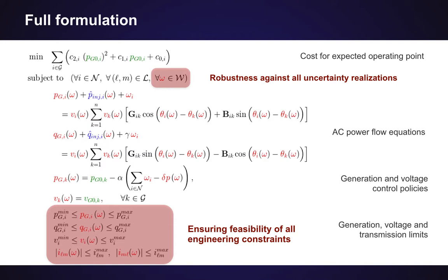The set W is actually an infinite set, so you cannot just enumerate all W's and check them explicitly. This is really an infinite-dimensional problem — omega can take on any value, because the uncertainty set is a box, which is a continuous range with an infinite number of vectors. Also, since this is a non-convex problem, we cannot just look at the corners of the boxes and assume everything in between is fine.